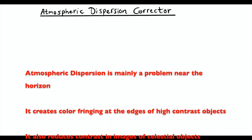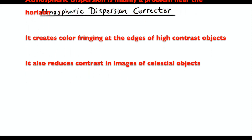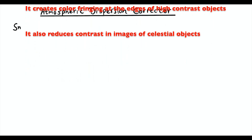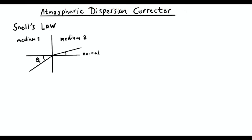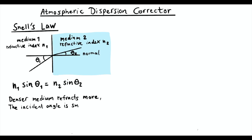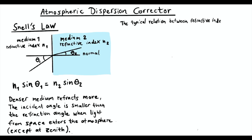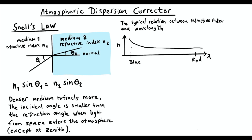In short, the problem to solve is the separation of colors when imaging celestial objects near the horizon. The atmosphere acts like a huge prism which refracts light differently depending on wavelength. When the light from an object enters the atmosphere, it is refracted according to Snell's law, where the index of refraction differs depending on wavelength. Typically, blue light is more refracted than red light.